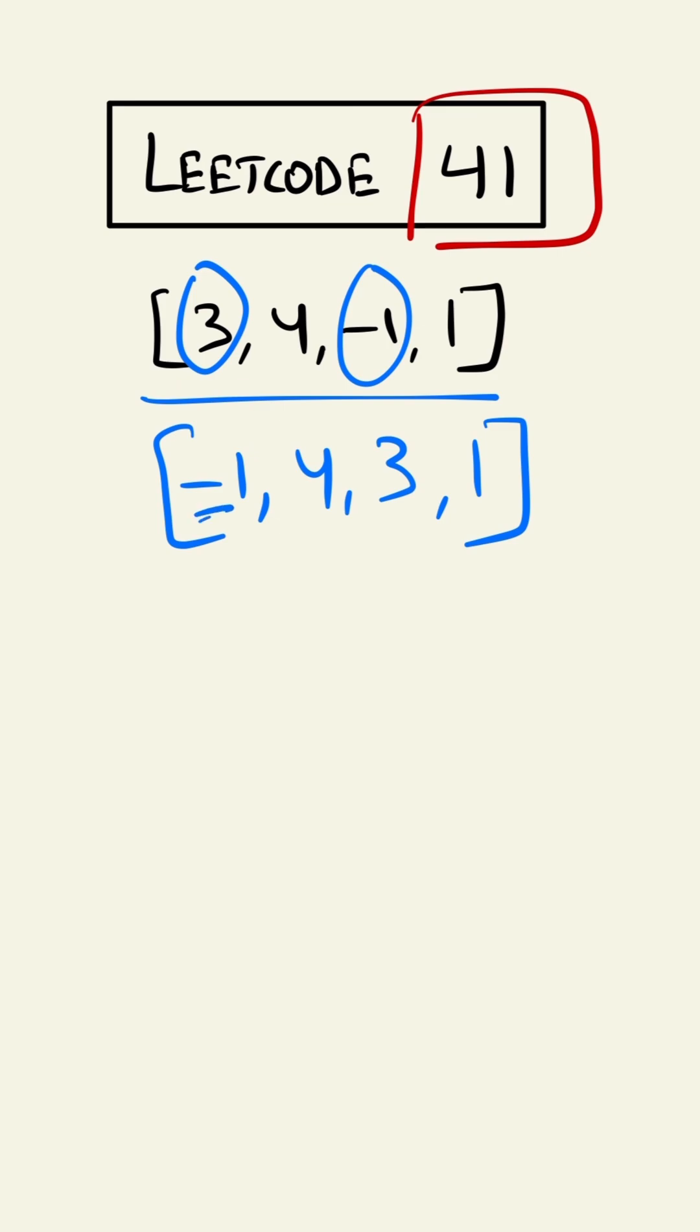Like I said, we'll ignore all the negative numbers. The next we'll encounter is 4. We have to put this at the right index, which is here.